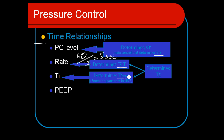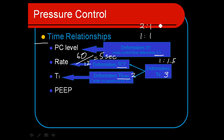Rate and TI together determine total cycle time. If TI is set at two seconds and total cycle time is five seconds, that leaves three seconds for exhalation — an IE ratio of 1 to 1.5. In this mode we often adjust TI to achieve a 1:1 IE ratio, or even an inverse 2:1 ratio, which has a major impact on mean airway pressure. We can manipulate mean airway pressure without increasing the pressure control level. PEEP is also a large part of mean airway pressure, starting at five and increasing as needed with worsening ARDS.